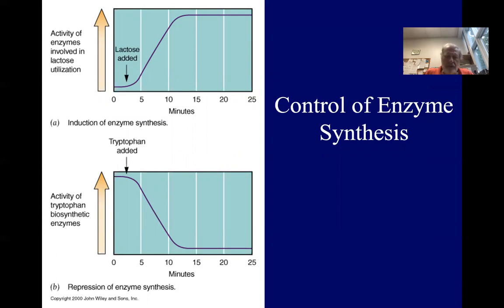Now below is the tryptophan operon. And its job is to make tryptophan. So when there's excess tryptophan around, it shuts off.